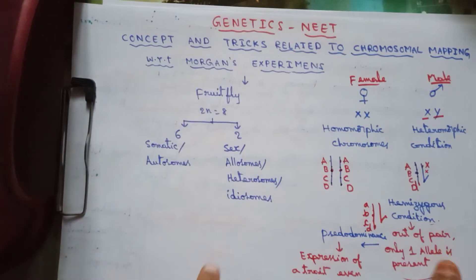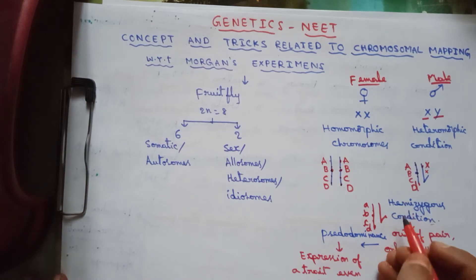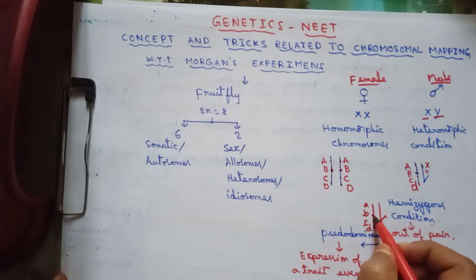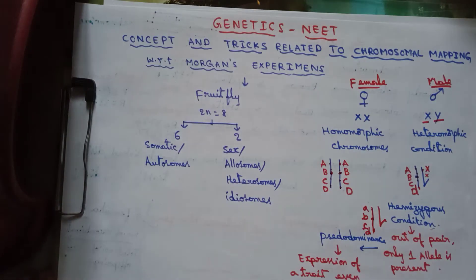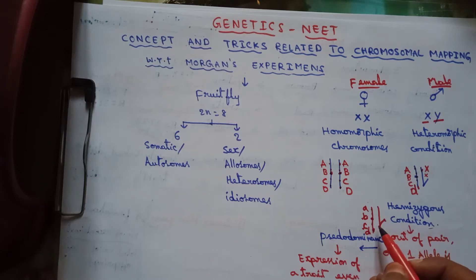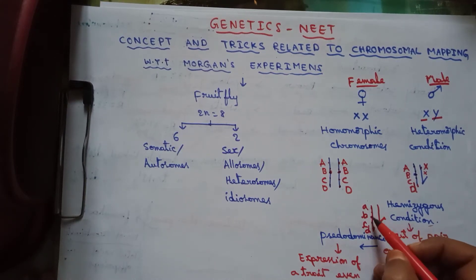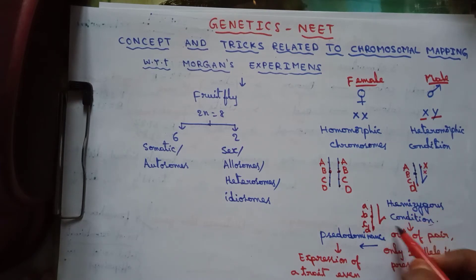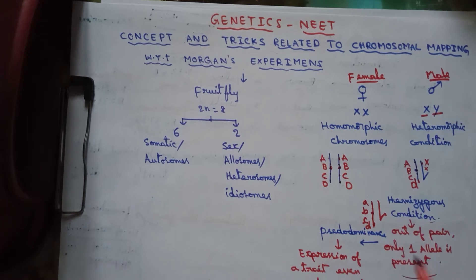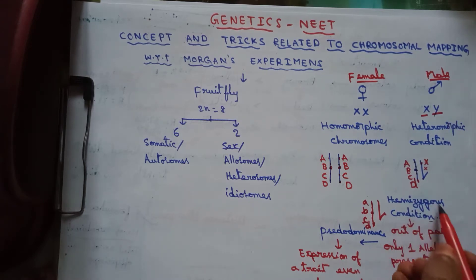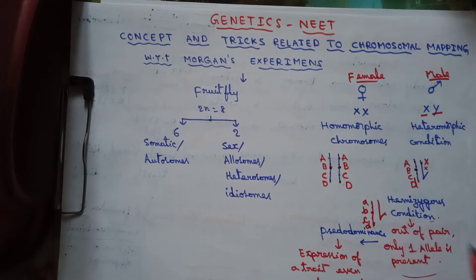On the X chromosome, genes with alleles Xa, Xb, Xc, Xd are present, but their alleles are not present on the Y chromosome. This means a single allelic condition is present - out of a pair of alleles, only one allele is present in the male fly. This condition is called hemizygous condition.